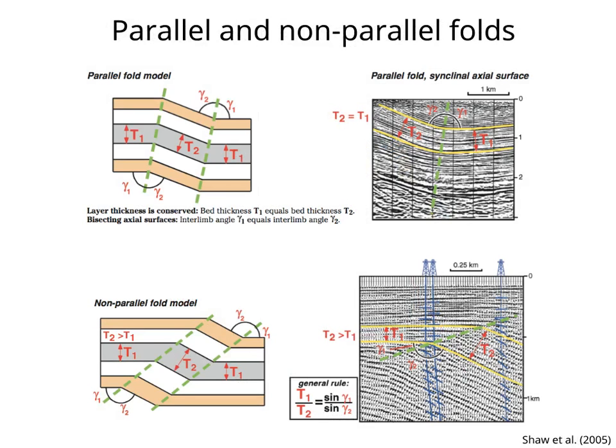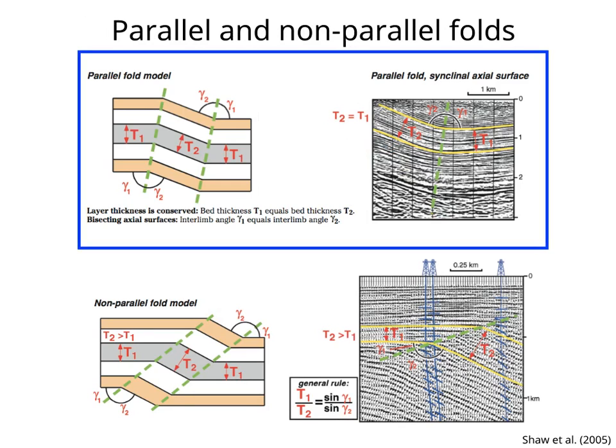Class 1B folds, or parallel folds, are the most common in rocks. In these folds, layer thickness is conserved, and the axial surface is the bisector of the interlimb angle. This is shown to the left in a diagram, and to the right in a non-vertically exaggerated seismic section in depth of a syncline.